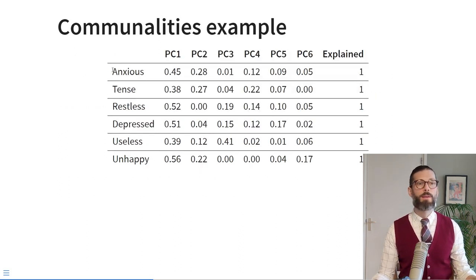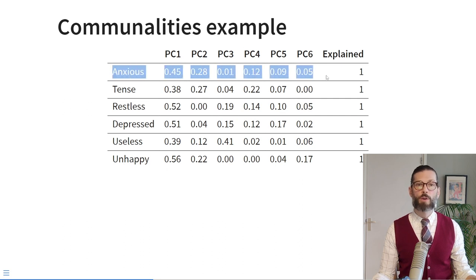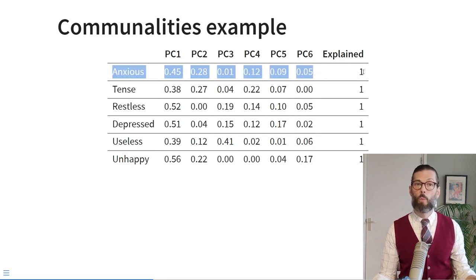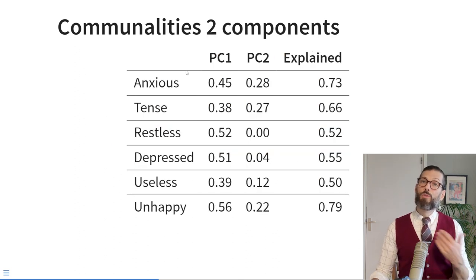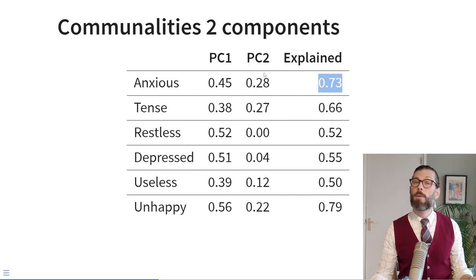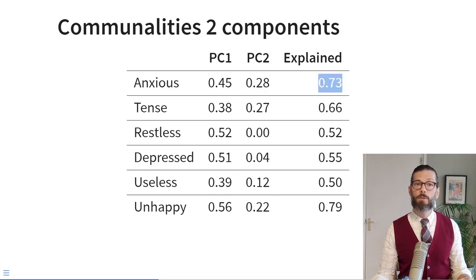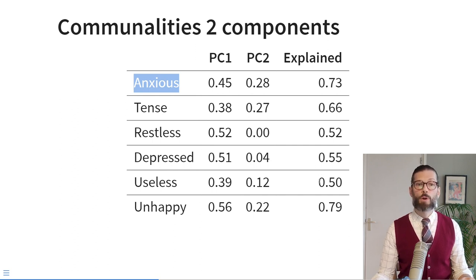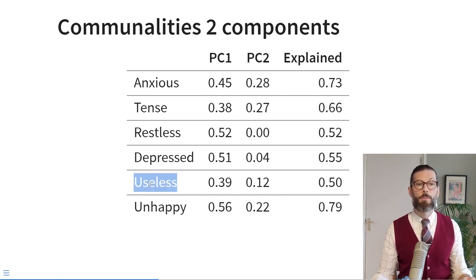Here's an example of those communalities. If we keep all components, 100% of the variance in each item is explained. But if we drop some — for theoretical reasons I decided to keep two components — we see that the communality for 'anxious' is still pretty high: with just two factors I can reproduce 73% of the variance. For some items the communalities are a bit lower; with two components I can reproduce only 50% of the variance in the item 'useless.' The opposite of a communality is the unicity: the variance not explained by our m retained components, calculated as 1 minus the communality.